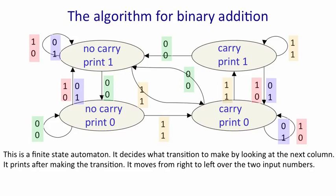And when it's in a state, it gets some input, which is the two numbers in the next column. And that input causes it to go into a new state. So if you look on the top right, it's in the carry state and it's just printed a one. If it sees a one, one, it goes back into the same state and prints another one.